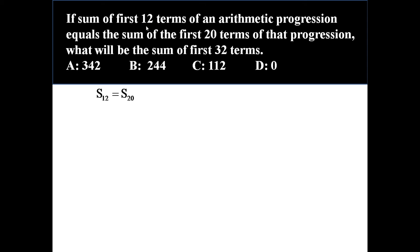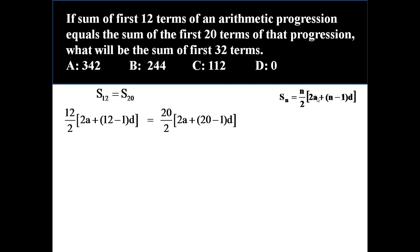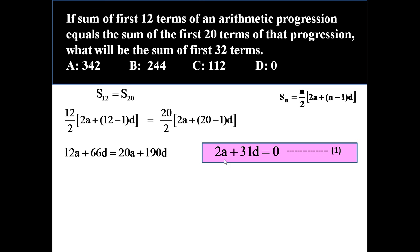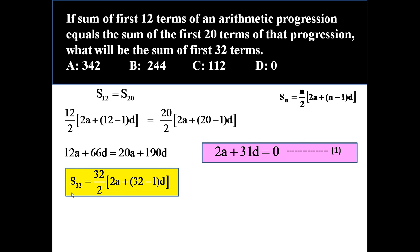It is given that S12 = S20. Using the formula Sn = (n/2)(2a + (n−1)d), putting n = 12 on the left and n = 20 on the right, we get 12a + 66d = 20a + 190d. Simplifying further gives 2a + 31d = 0. Call this equation number 1.